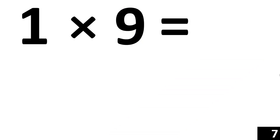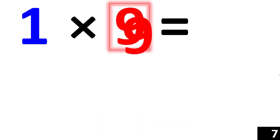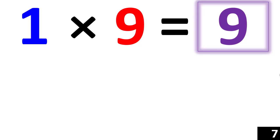For 1 times 9, we just use the rule of 1. Any number times 1 is that number. So, 1 times 9 is equal to 9.